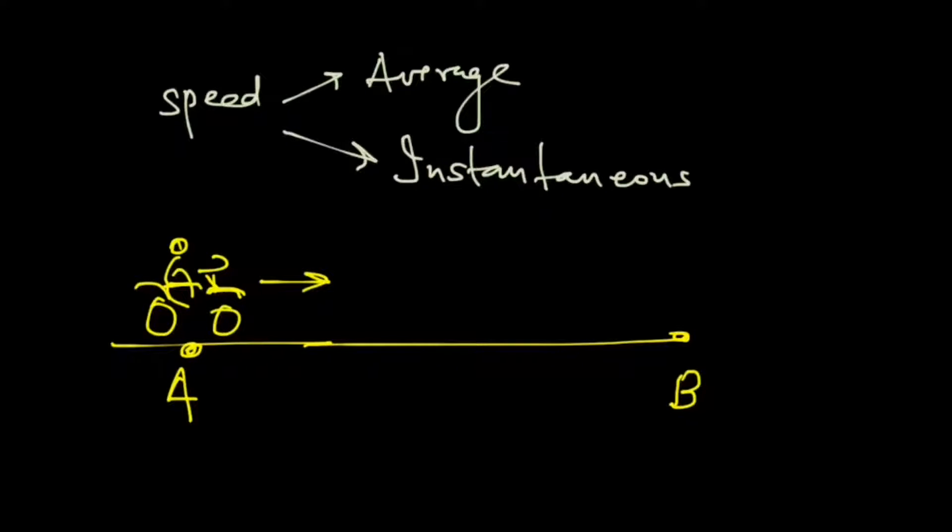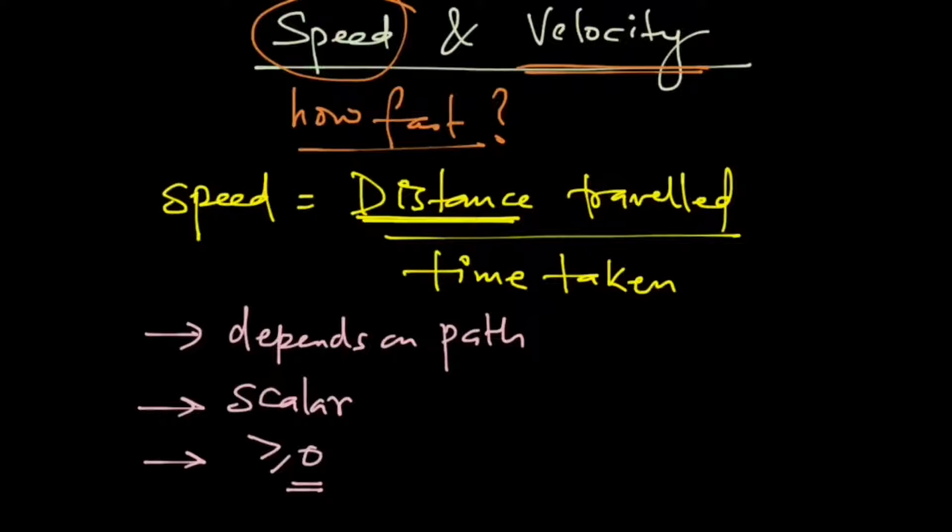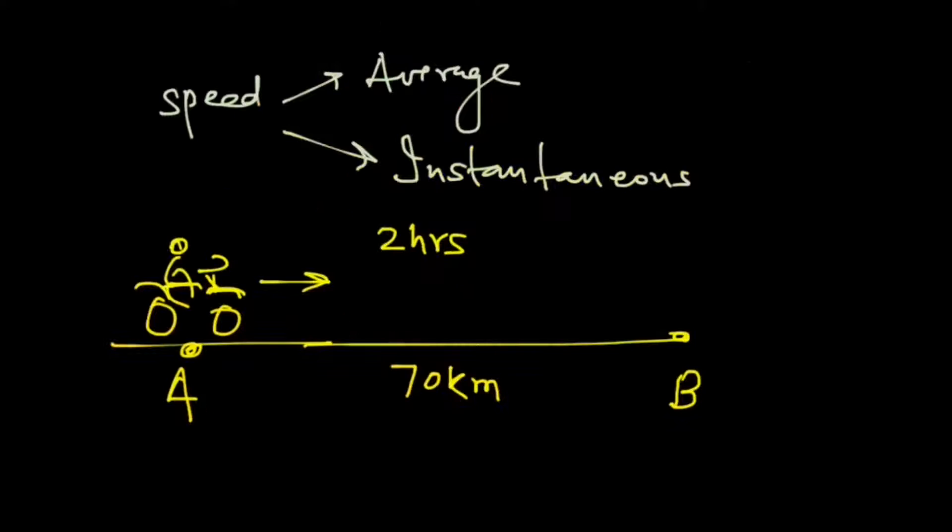The distance between these two cities is let's call it 70 kilometers, and the time that you take in going from A to B is let's say two hours. So from our previous definition, what is the speed at which you are traveling? Speed equals to distance traveled upon time taken.